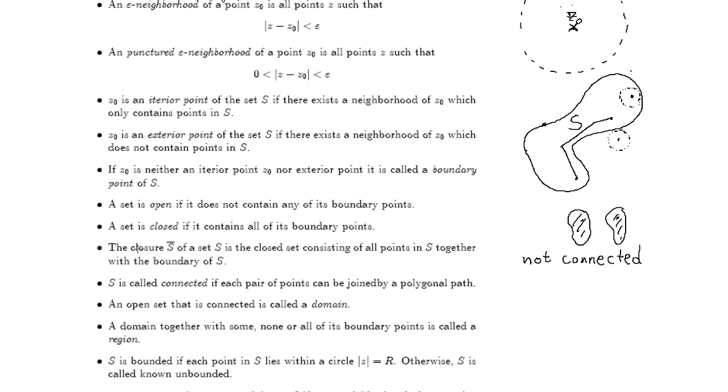The closure of a set capital S is denoted in this way. Capital S bar is the closed set containing all points on capital S, this set together with the boundary of S.